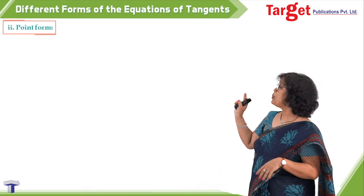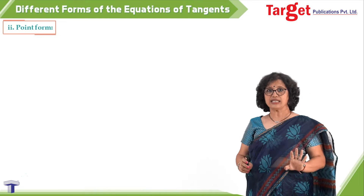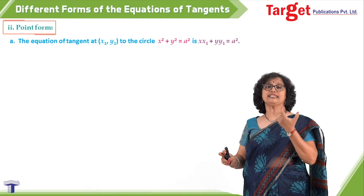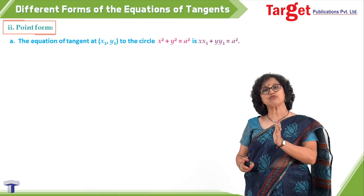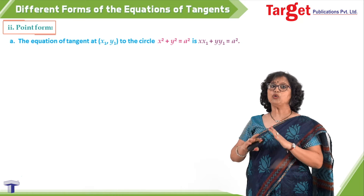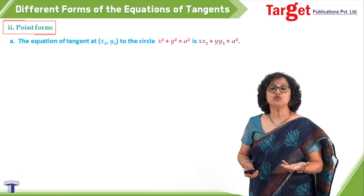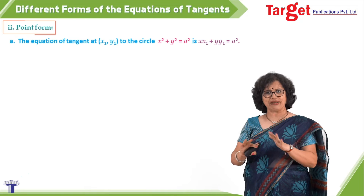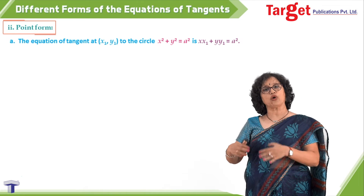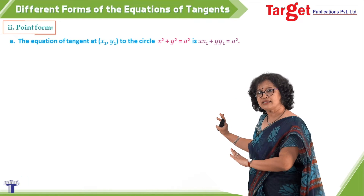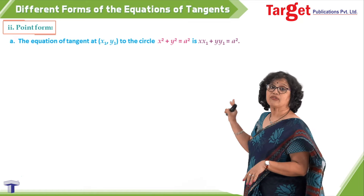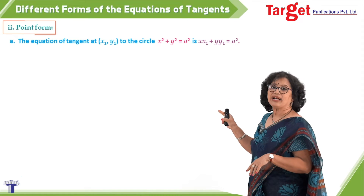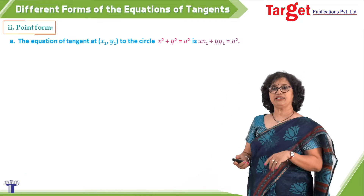The next form is the point form, where the point at which the tangent is drawn is given. For the circle x² + y² = a² with point of contact (x₁, y₁), the equation of the tangent is xx₁ + yy₁ = a². A useful memory aid: the x² term is replaced by xx₁, and the y² term is replaced by yy₁. I am not going into the derivation — for problem solving, just apply this result directly.